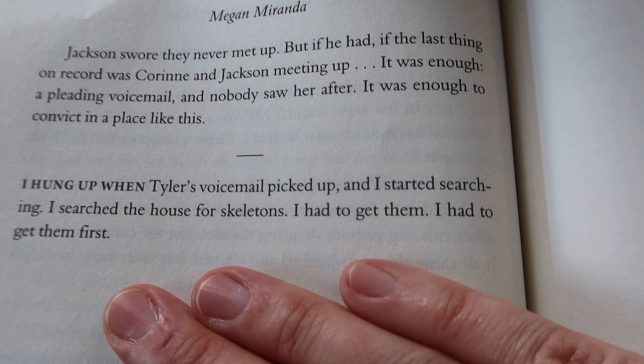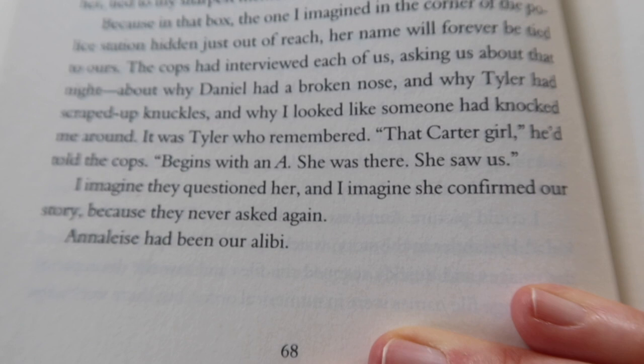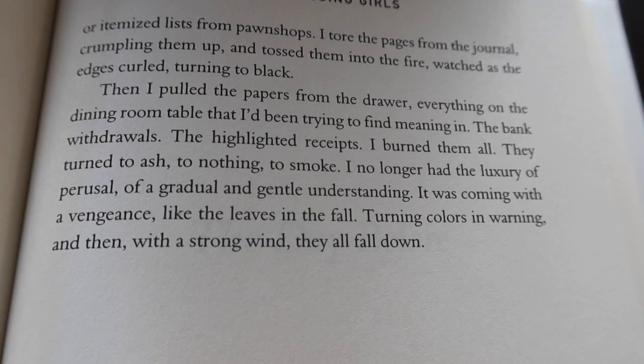Now let's look at some endings. 'I hung up when Tyler's voicemail picked up, and I started searching. I searched the house for skeletons. I had to get them first.' This scene ends with the character getting a new mission or goal. 'Her cold hands at my elbows, her breath in my ear, Bailey's laughter tight and nervous in the background. The scent of Corrine's spearmint gum, her fingers dancing across my skin. Jump, she said. She told me to jump.' I'd call this a cliffhanger ending. 'I imagine they questioned her, and I imagine she confirmed our story because they never asked again. Annalise had been our alibi.' This one is a plot reveal. 'It was coming with a vengeance, like the leaves in the fall, turning colors and warning, and then with a strong wind, they all fall down.' This chapter ends with simile and foreshadowing.